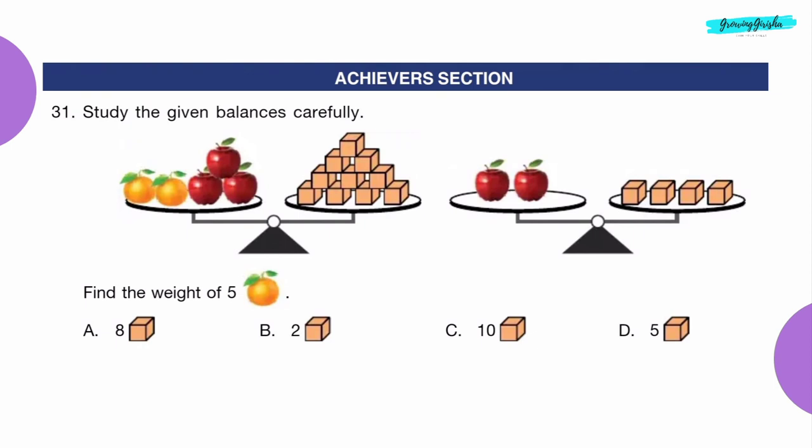Achievers Section. Question 31: Study the given balances carefully. Find the weight of five oranges. Option C: 10 cubes.